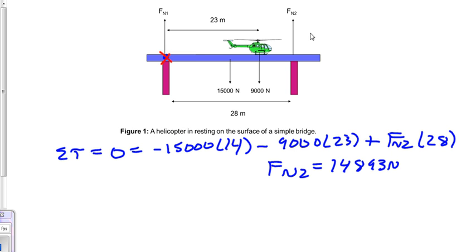So now we know the value of force normal 2, 14,893 newtons. Now we're going to get force normal 1. We can just add up all of the forces in the y direction. We know that equals zero. That saves us from having to do torques again.